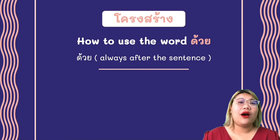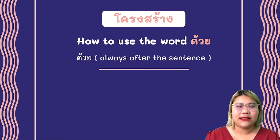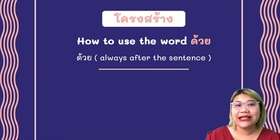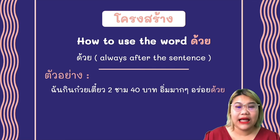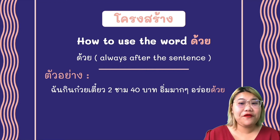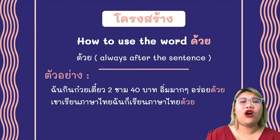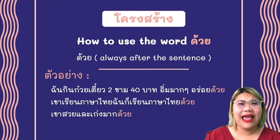The next pattern uses the word ด้วย, which is always placed after the sentence, same as the word เหมือนกัน. They are flexible — you can use เหมือนกัน or ด้วย; they mean the same thing. For example: ฉันกินกวัยเตียวสองชาม สี่สิบบาท อิ่มมากมาก อร่อยด้วย — I ate two bowls of noodle, just 40 baht, very full and also delicious. เขาเรียนภาษาไทย ฉันก็เรียนภาษาไทยด้วย — He/she studied Thai and I also studied Thai too. And ขาวสวยและเก่งมากด้วย.